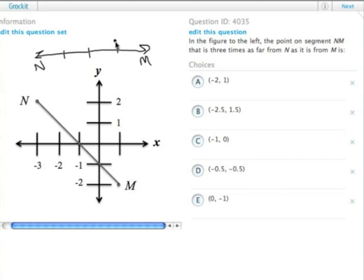If it's right here, there's one unit here and then there are three units on this other side. So the point on line segment NM is three units from N and one unit from M.